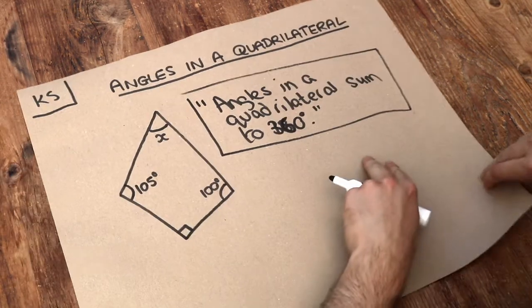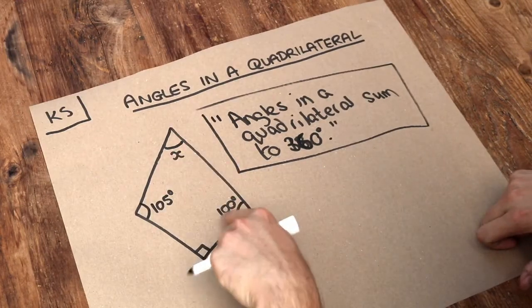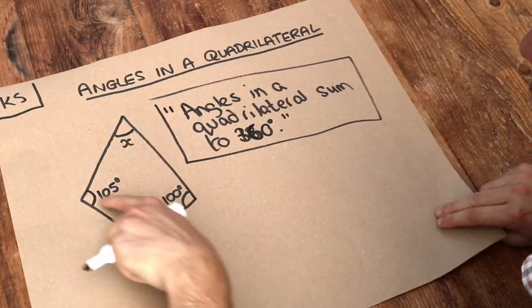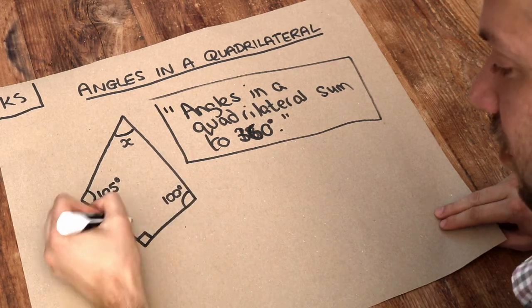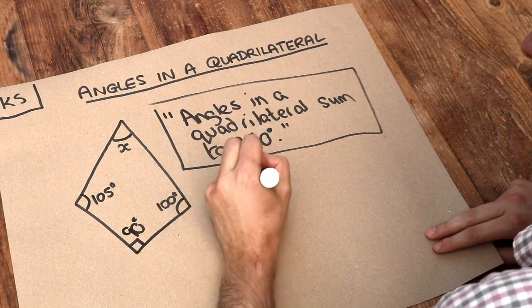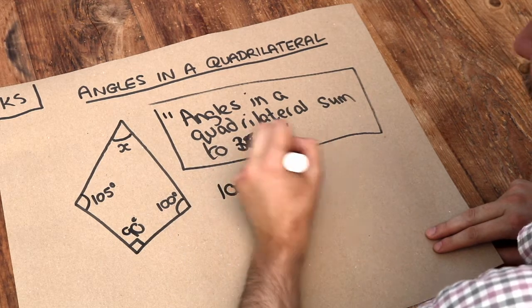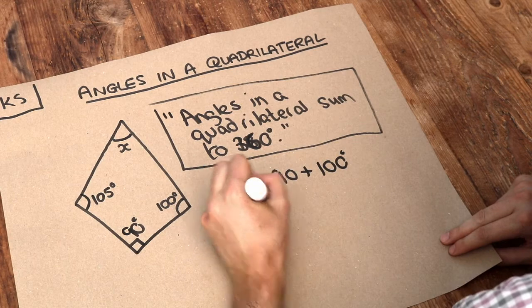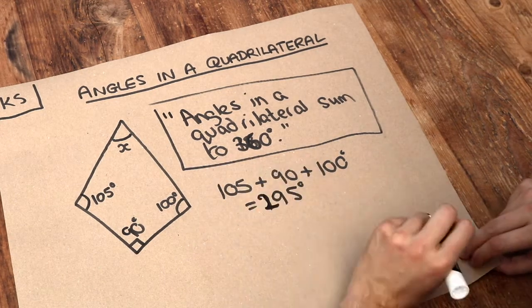So let's apply that on this problem here. These four angles add up to 360 degrees. So if we add up these three angles, noting that's a right angle which is 90 degrees, then 105 plus 90 plus 100 degrees is equal to 295 degrees.